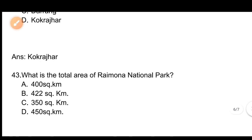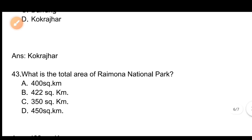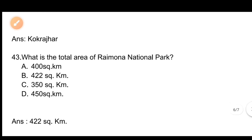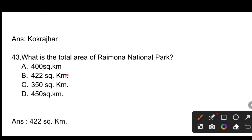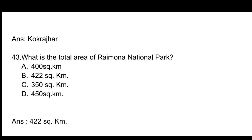Question number 43: What is the total area of Raimona National Park? Options: A) 400 square kilometers, B) 422 square kilometers, C) 350 square kilometers, D) 450 square kilometers. The correct answer is B, 422 square kilometers.